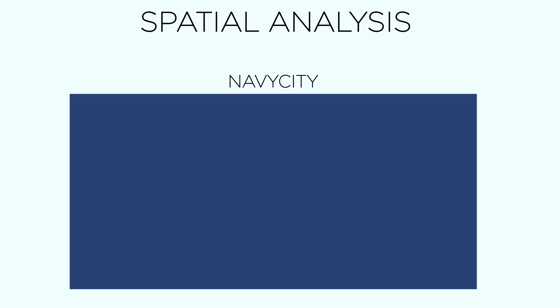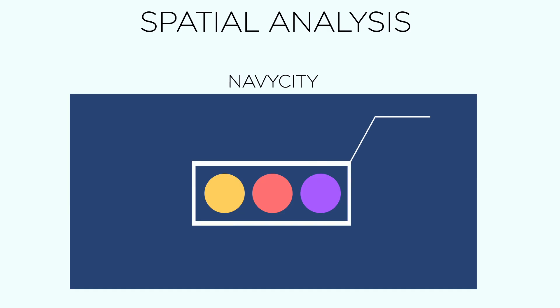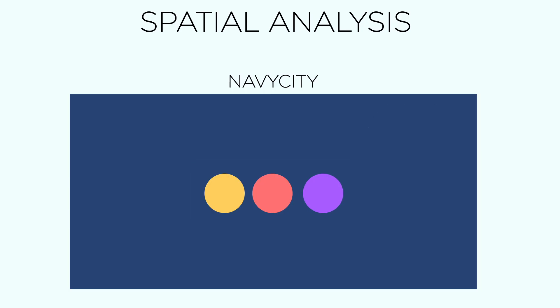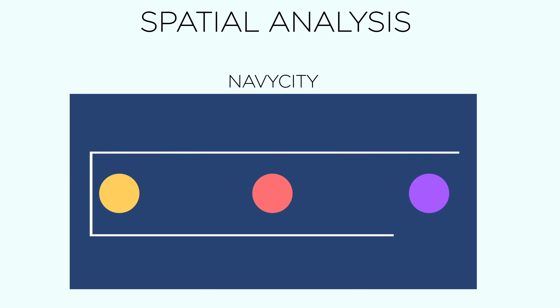Spatial analysis is the act of studying a given space, analyzing its patterns, and making assumptions. Pretend there's a given area called Navy City, and within Navy City there are three people: red, OJ, and purple. You see how they live very close to one another — that observation would be spatial analysis, and in this case would be known as being clustered. Now let's pretend purple got a job somewhere else, and OJ got tired of red's dog barking and messing up their lawn, so OJ decided to move further west away from red. If you were to conduct spatial analysis on their living conditions, you would describe it as being dispersed.